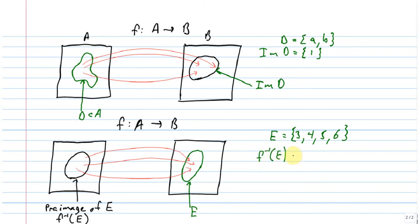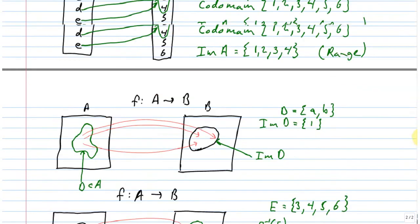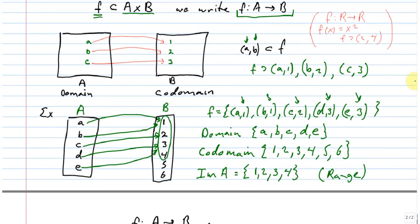So if we look back at f inverse of E, then what is f inverse of E? Well, it's all elements with, all ordered pairs with, all first terms in ordered pairs that have a second term in E. Or if you think of it in terms of arrows, it's all elements that have an arrow that hits something in E.